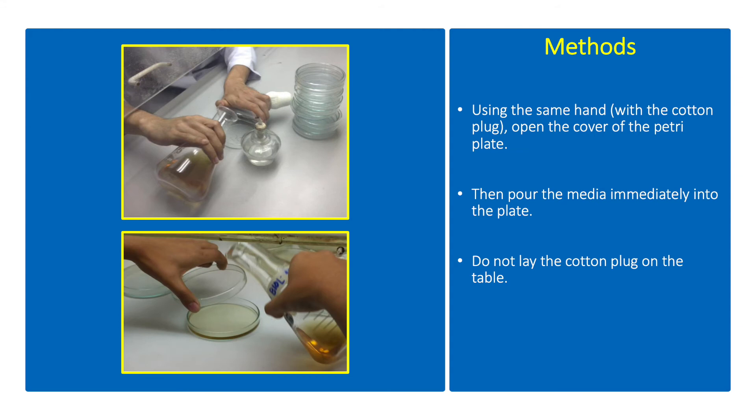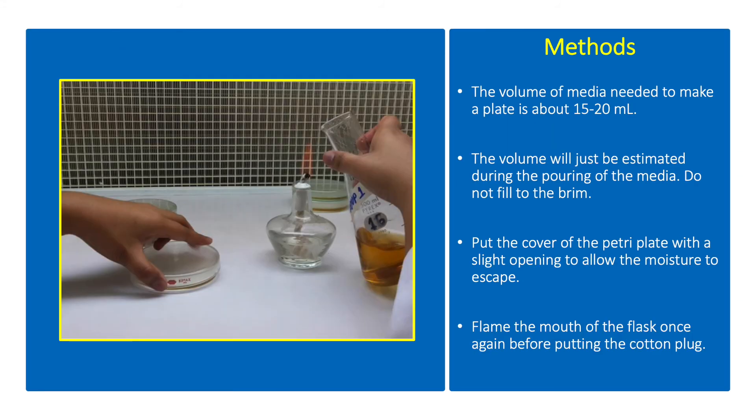Do not lay the cotton plug on the table. The volume of media needed to make a plate is about 15 to 20 ml. The volume will just be estimated during the pouring of the media. Do not fill to the brim. Put the cover of the petri plate with a slight opening to allow the moisture to escape.